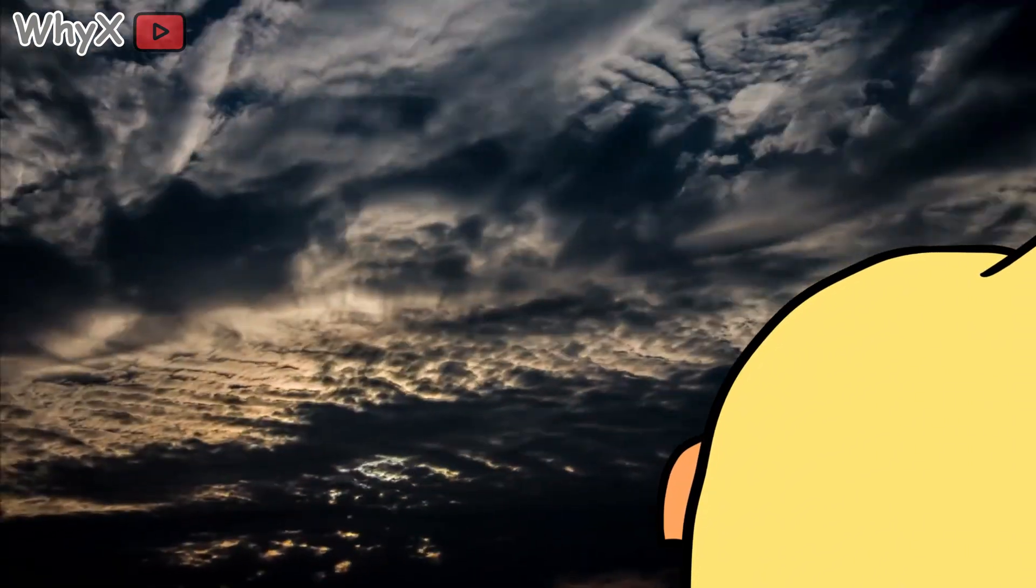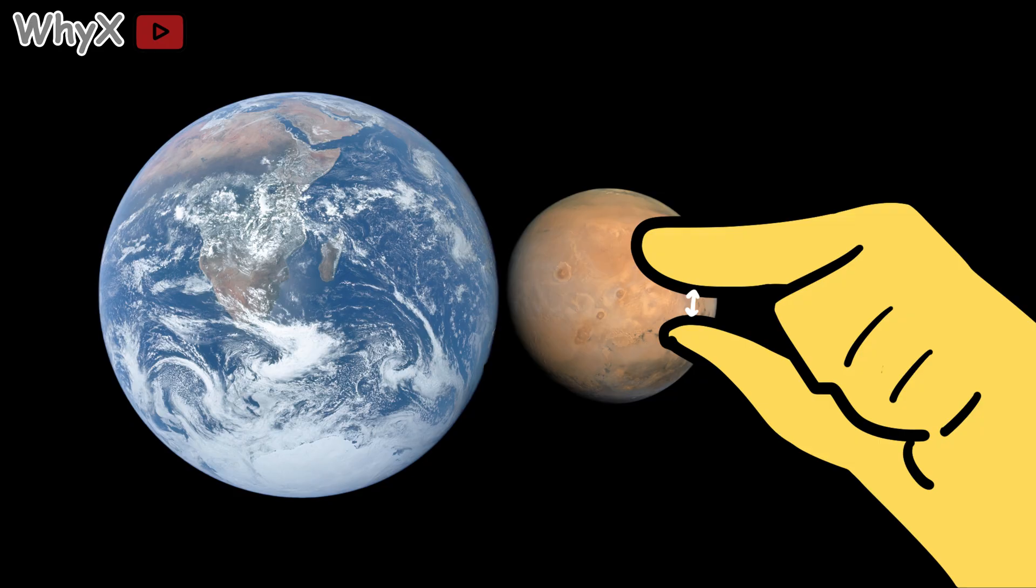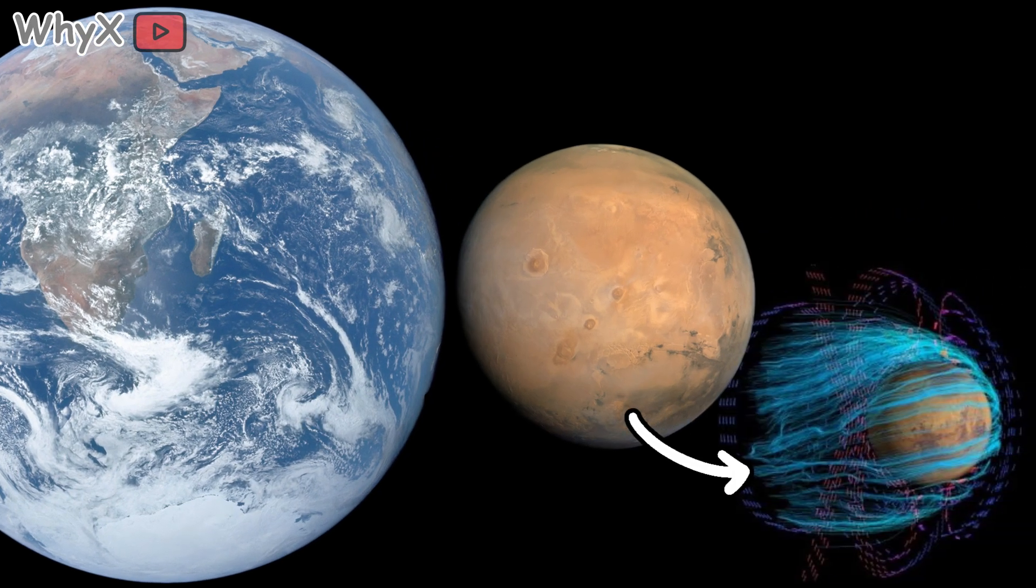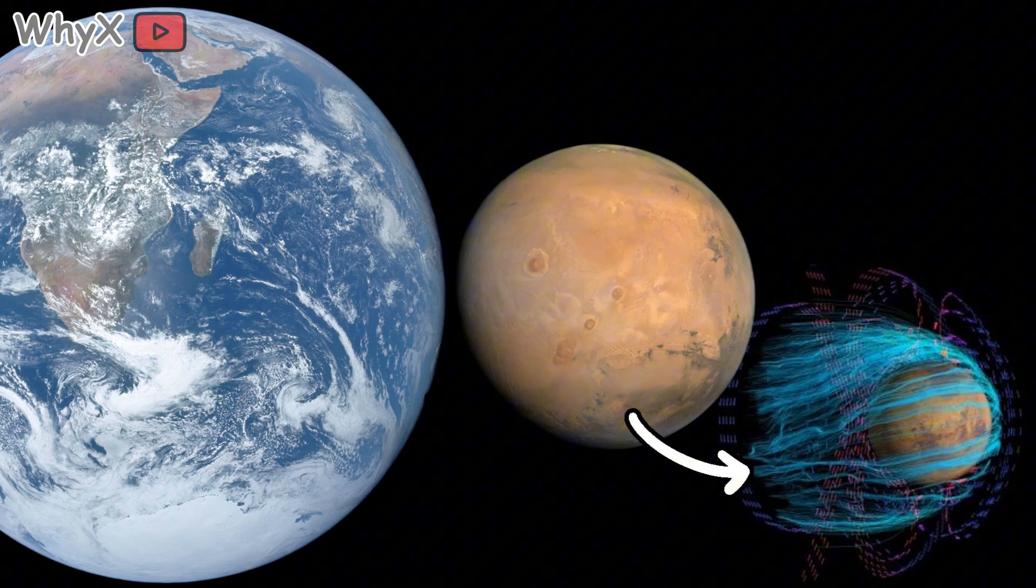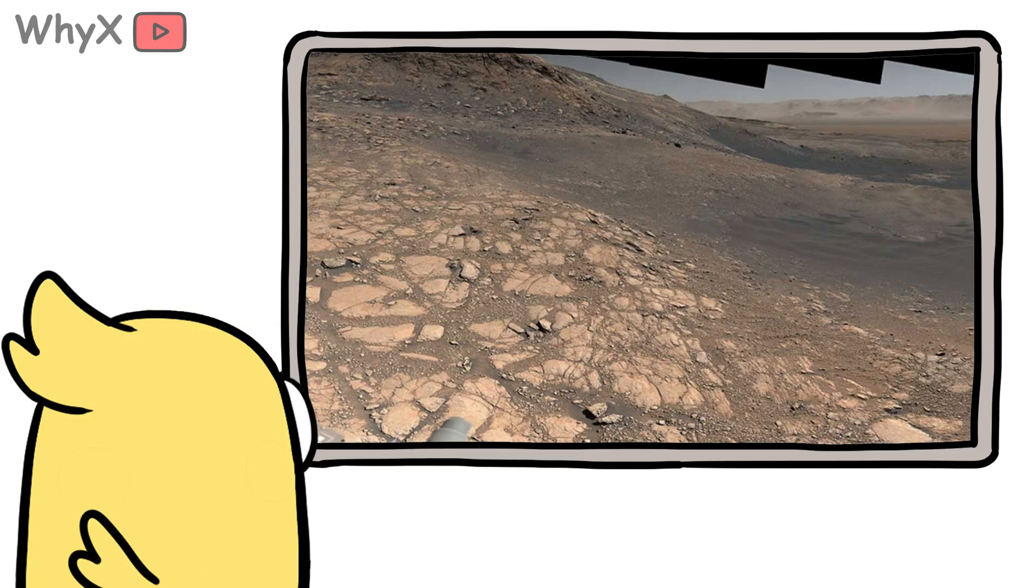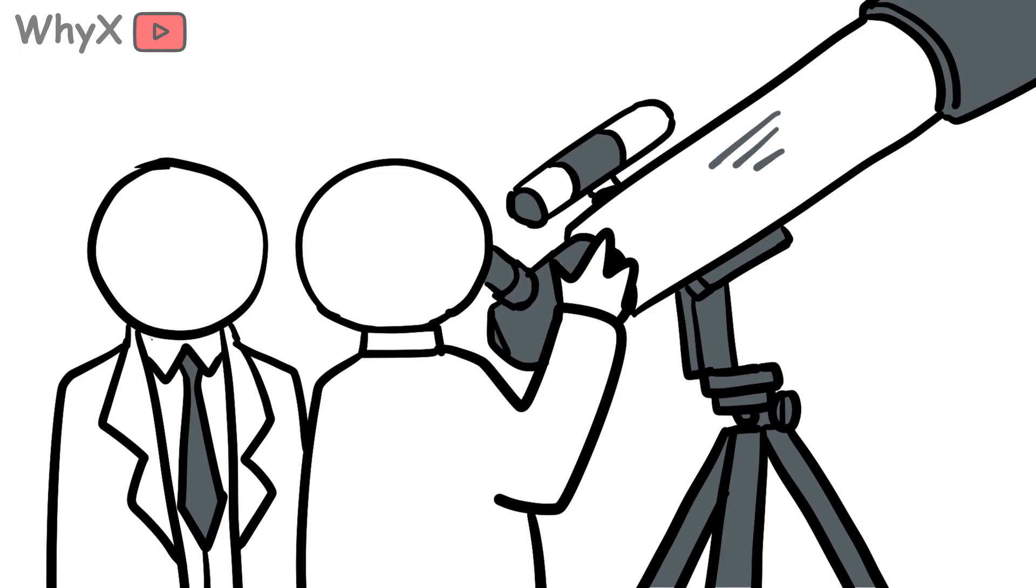You can watch the counterexample a few steps outward. Mars, smaller and geologically early to bed, lost its global magnetic field, then its air, then its surface water. Today it keeps its lakes as rumors in rocks and ice. The desert that almost became a coastline is a cautionary tale we can see with telescopes.